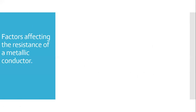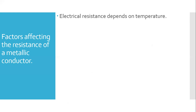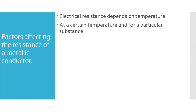What are the factors affecting the resistance of a metallic conductor? Electrical resistance depends on temperature. If temperature increases, the collision of molecules increases, and if collision increases, resistance increases. This applies at a certain temperature and for a particular substance.